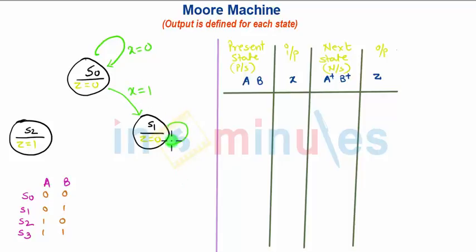S1 state will remain in S1 for X equal to 1 and it will move to S2 state for X equal to 0. The state S2 moves to S0 for any input X equal to 0 or 1. But in all these three cases output is fixed with the state.